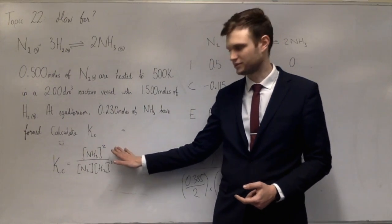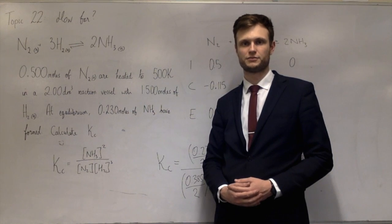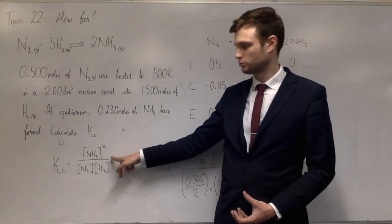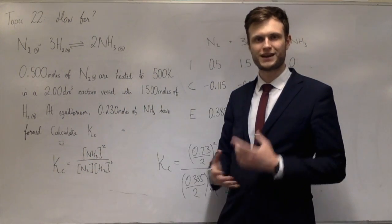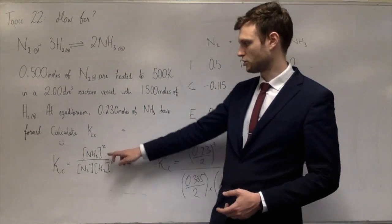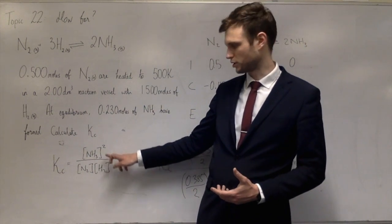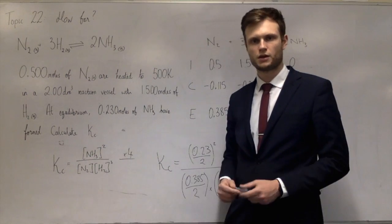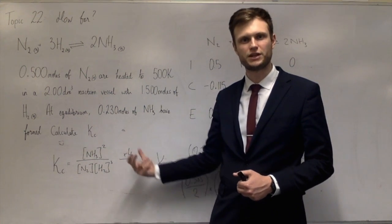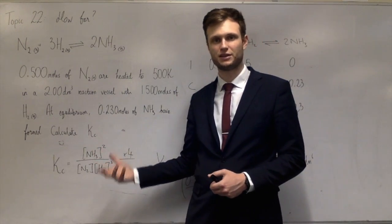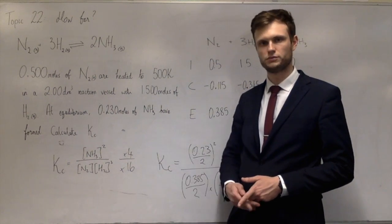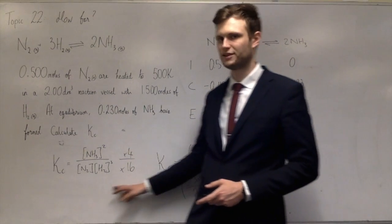Increasing the pressure increases the concentration of all the gases. If I decrease the vessel to one decimetre cubed, all concentrations double. Doubling the concentration of ammonia increases the numerator by a factor of four (doubled then squared). Doubling nitrogen and hydrogen increases the denominator by a factor of 16 (nitrogen doubled, hydrogen doubled then cubed). So you'd expect KC to be a quarter of its size.